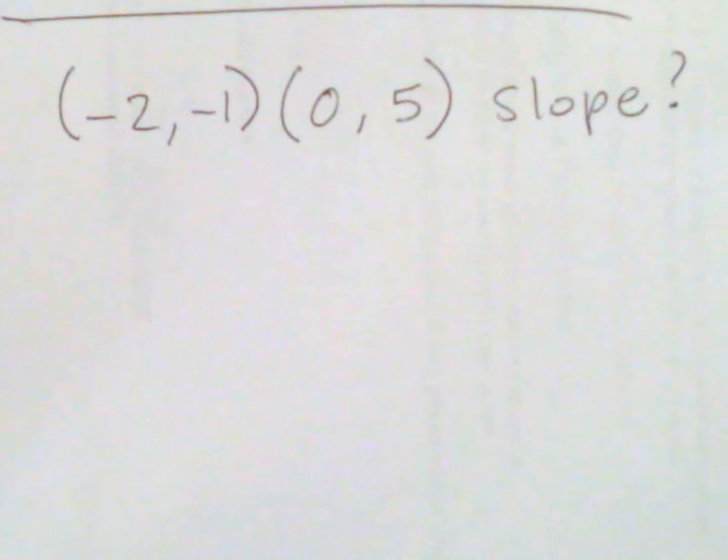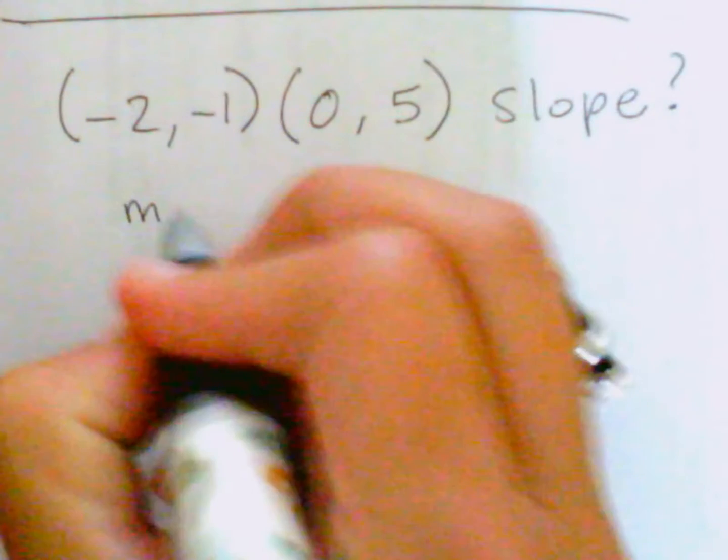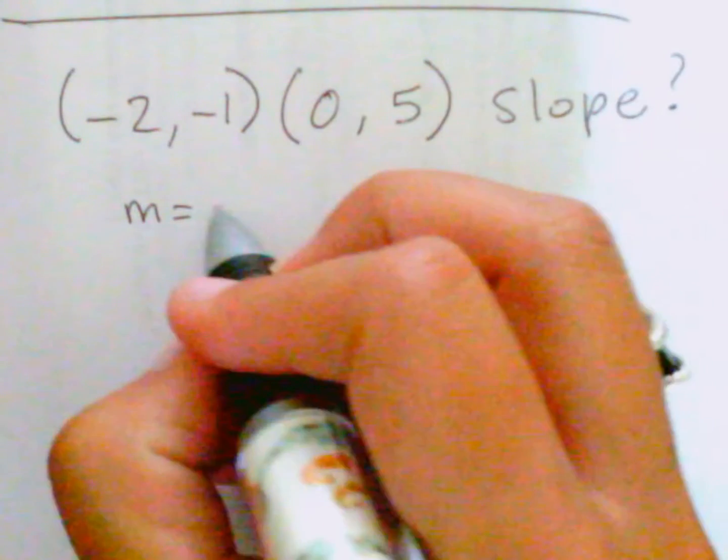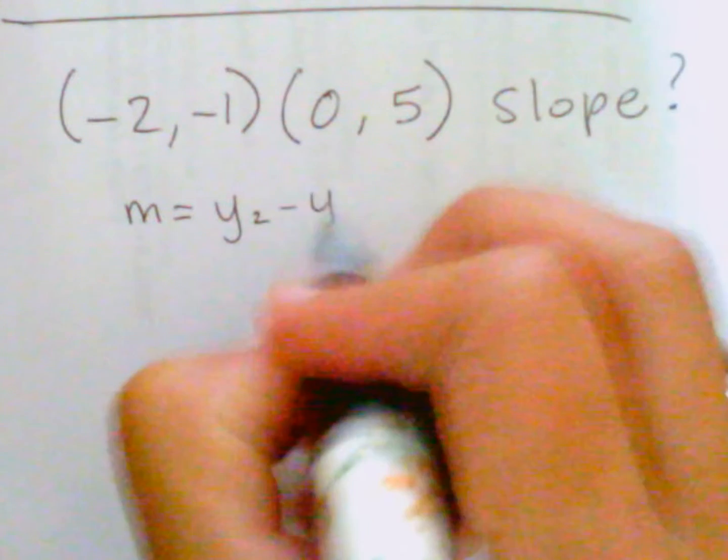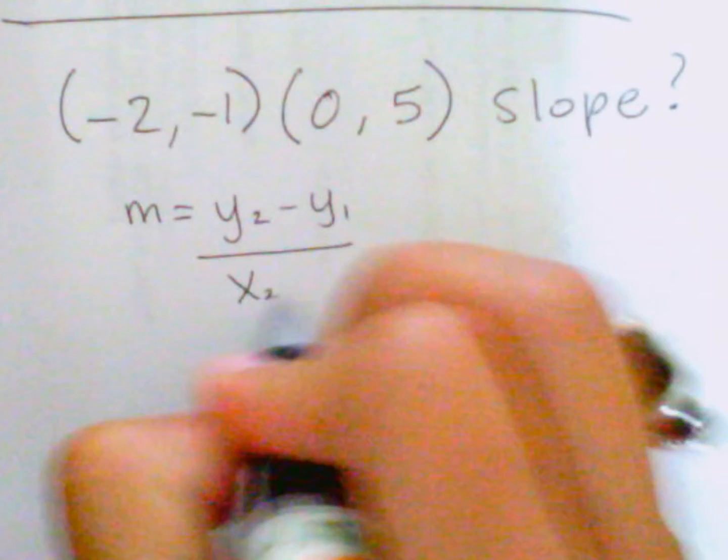Okay, so we're reviewing how to find slope given two points. So as you may recall, the slope formula M is y2 minus y1 over x2 minus x1.